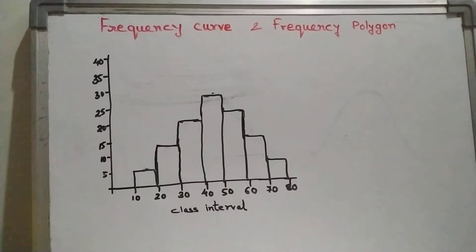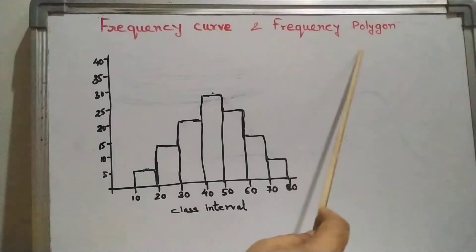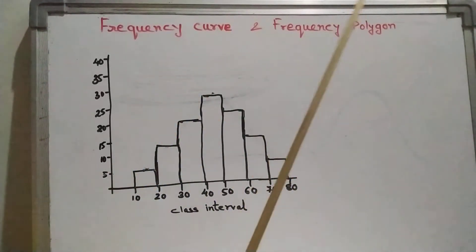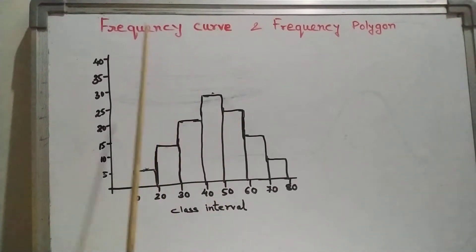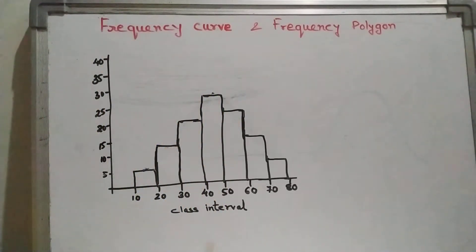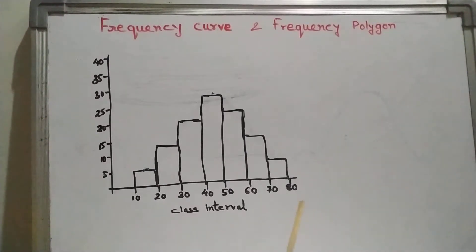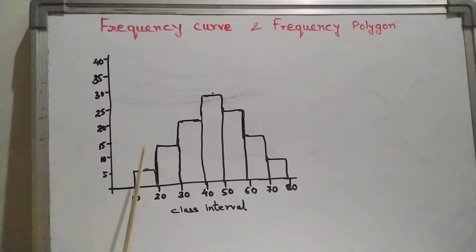Hello students, let us understand what is a frequency curve or frequency polygon, and how to draw them. For this we first need to draw a histogram. As you know, from the continuous frequency distribution we can plot a histogram by taking class interval along the x-axis and frequency along the y-axis.